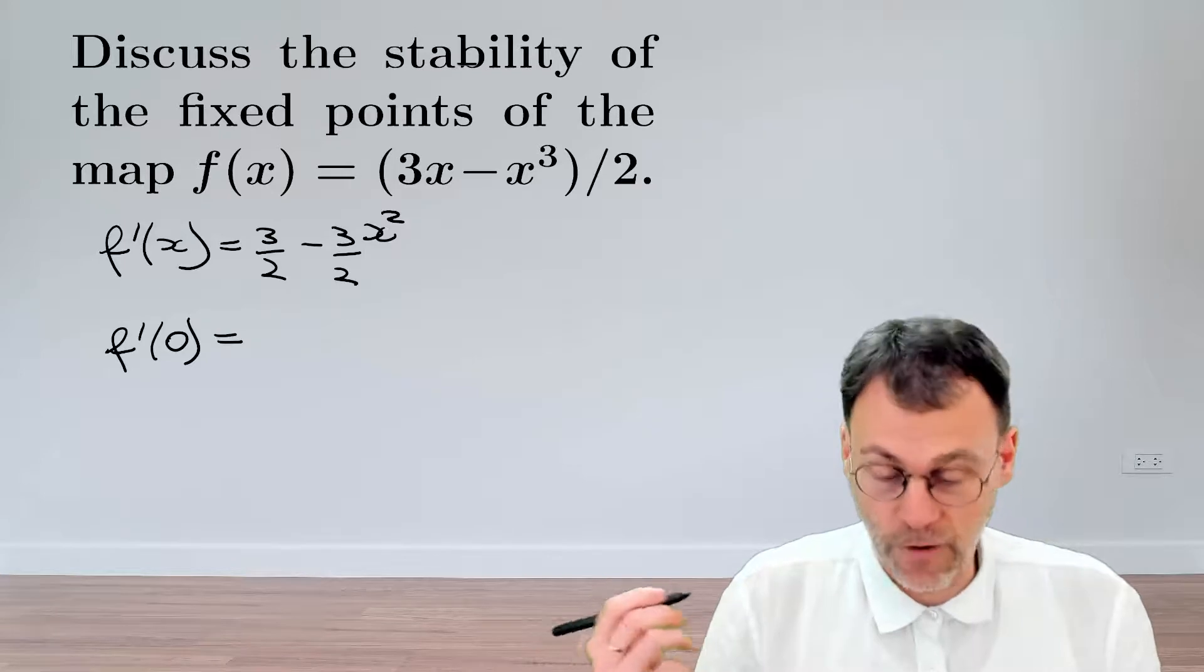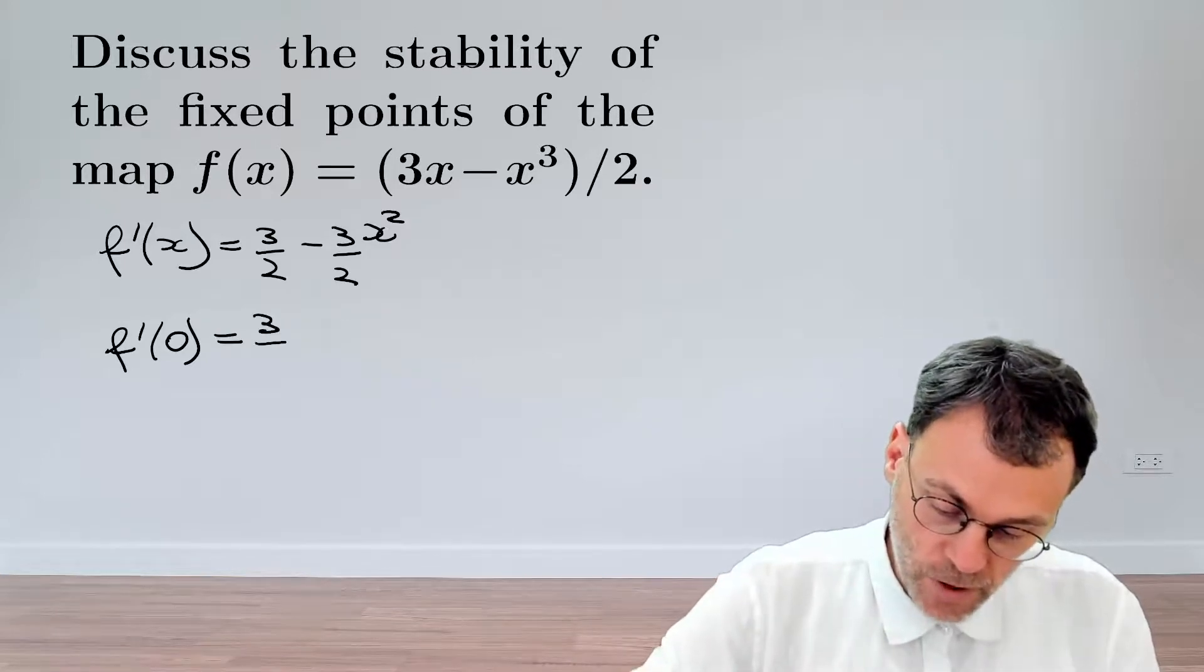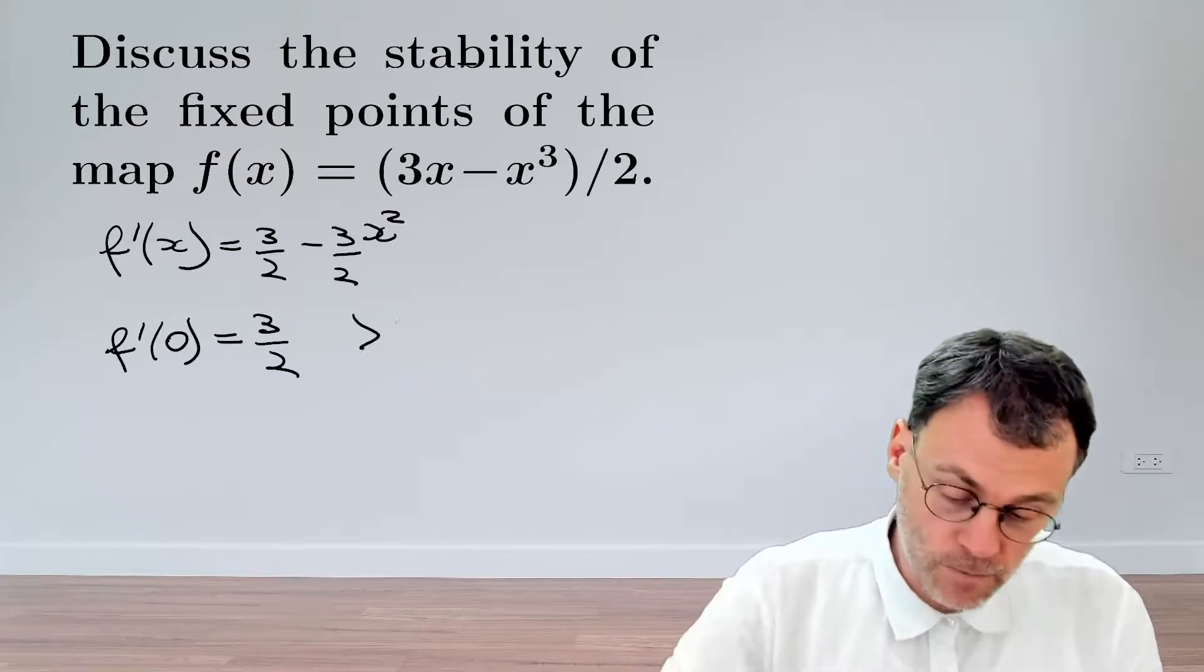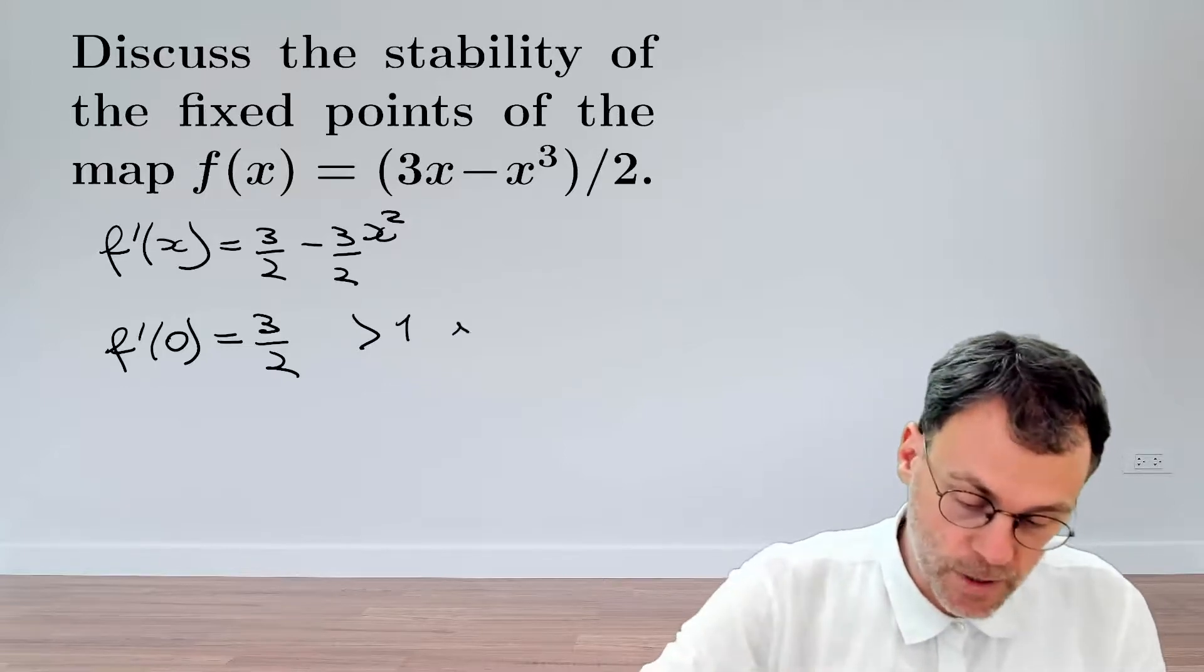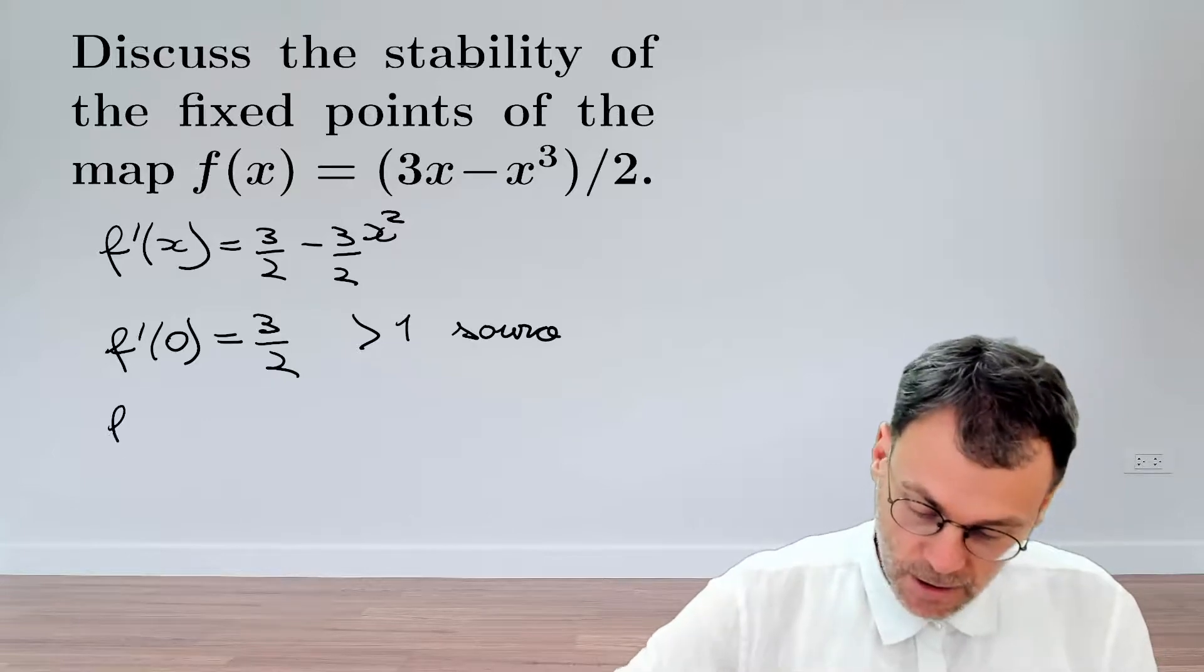At the origin, f'(0) is going to be 3/2. Now, this is in magnitude bigger than one, so this will be an unstable fixed point - this will be a source.